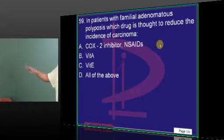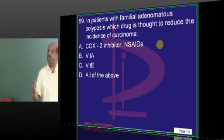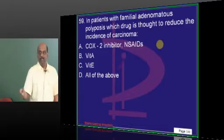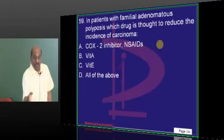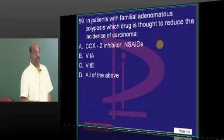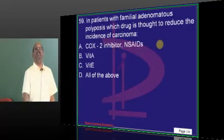If there is a first degree relative with FAP, always do colonoscopic screening in the proband of that first degree relative. If you discover FAP in him, prophylactic basis may colectomy.